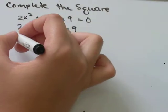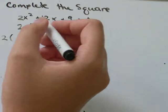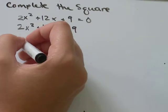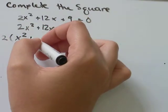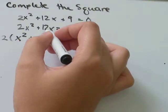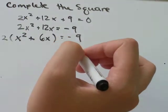So I'm going to factor out, sorry not 2x, just 2. So when I take 2 out of x², I'm left with x², plus when I take 2 out of 12x, I'm left with 6x, equals negative 9.